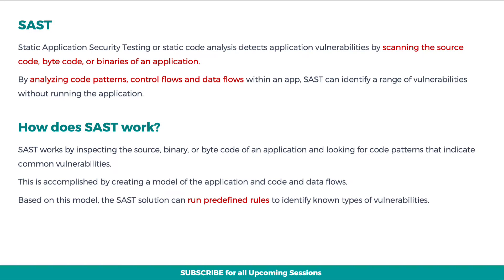Static application security testing, or static code analysis, detects application vulnerabilities by scanning the source code, byte code, or binaries of an application. By analyzing code patterns, control flows and data flows within an app, SAST can identify a range of vulnerabilities without running the application.